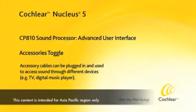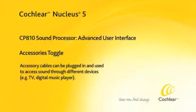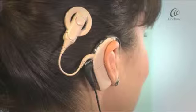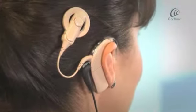Accessory cables can be plugged in and used to access sound through different devices, like a television. Sound will automatically come through an accessory when it's plugged into the processor.